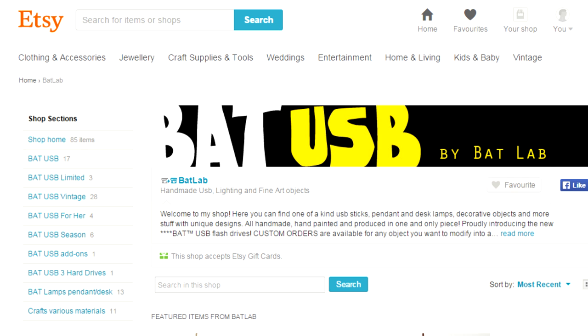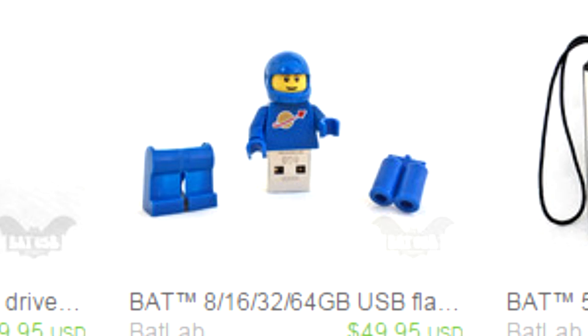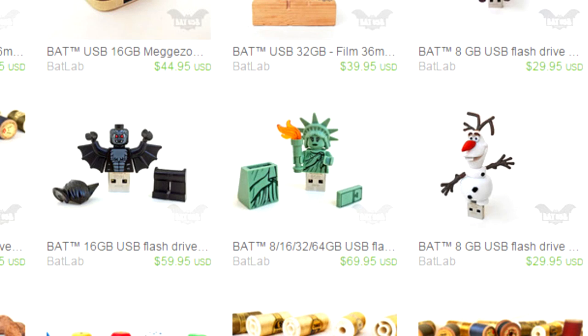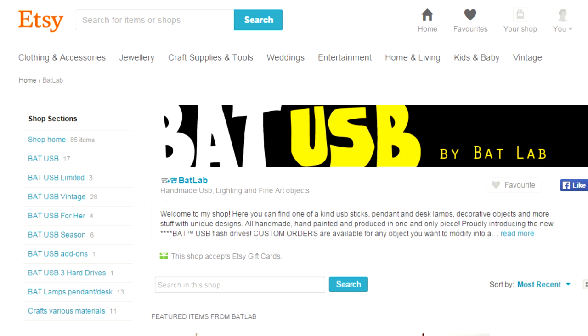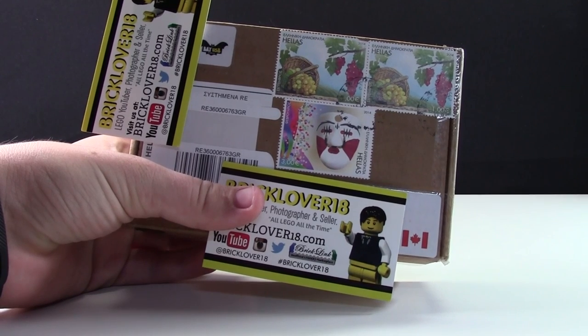These USB sticks can be purchased from BatUSB on Etsy at www.bat.gr. On their Etsy shop they have a variety of other LEGO USB sticks as well as regular USB sticks in general that range in sizes from 8 gigabytes to 64 gigabytes. Here is the box they came in.